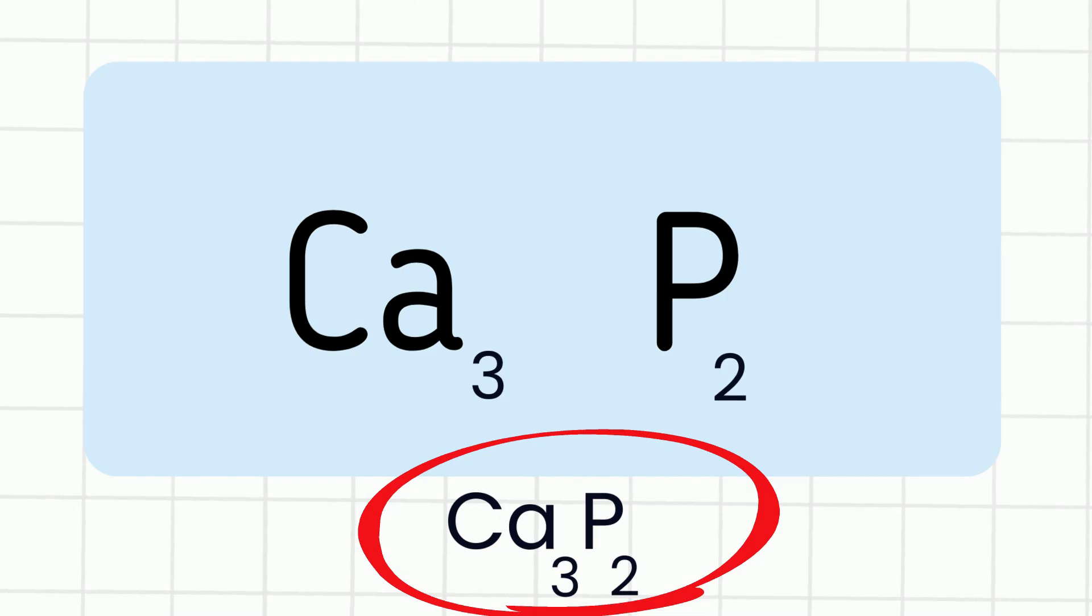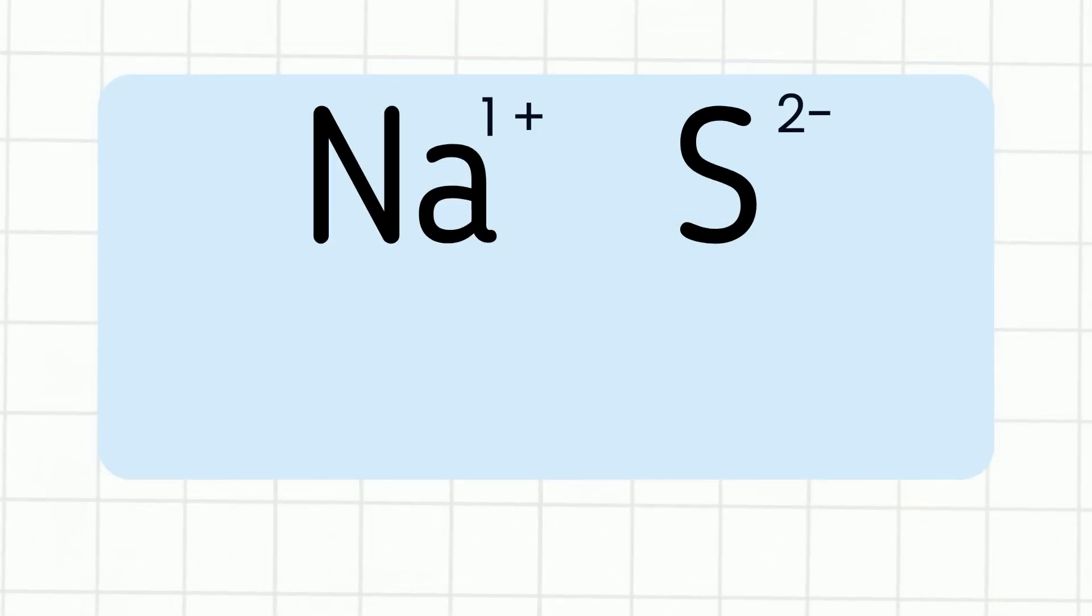Up next we have sodium ion with a charge of 1 and a sulfur ion with a negative 2 charge. Remember again the cation goes first, anion goes second. We're going to do the crisscross method. We're going to take the number 2 of sulfur, crisscross, and it goes with the sodium, and then the 1 charge goes with the sulfur.